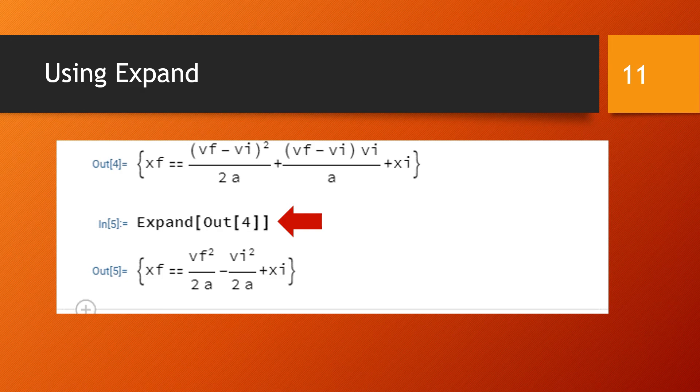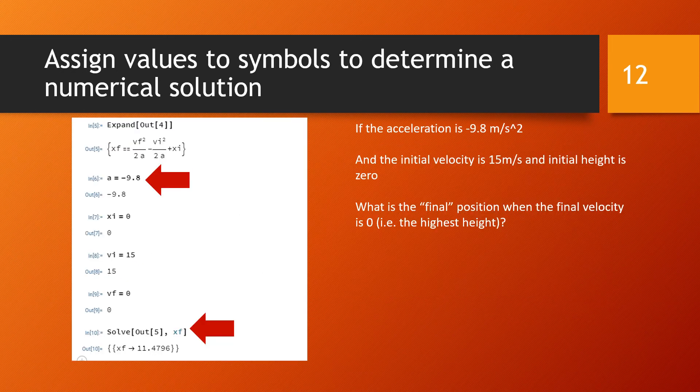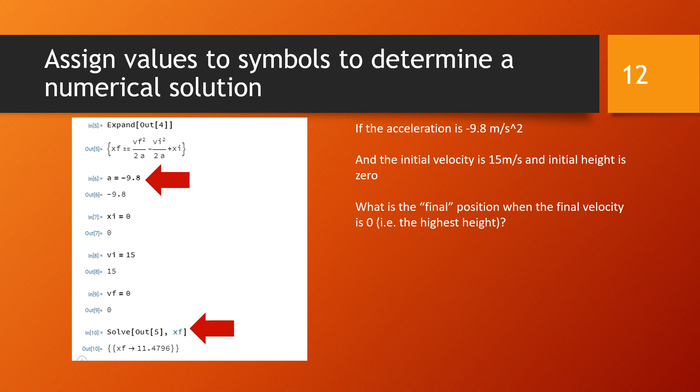So Out[5] is an equation for the xf, the final position, in terms of vf the final velocity, vi the initial velocity, a the acceleration, and xi the initial position. And mathematics has been doing all this stuff symbolically for us, but we can of course put in numbers.